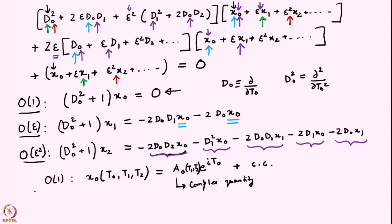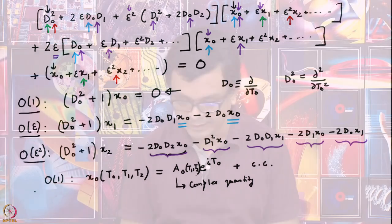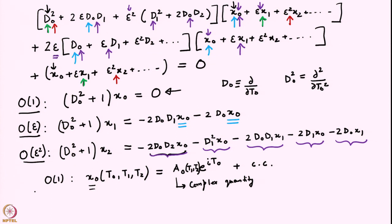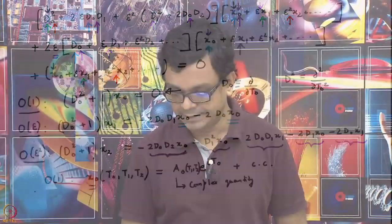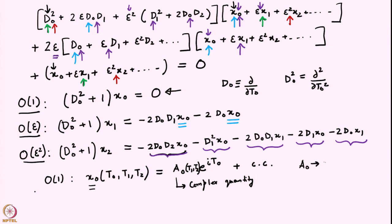This is slightly more complicated than before: earlier we encountered complex constants, now we encounter complex functions of t1 and t2. Let us see how to determine these unknown functions. At this order, a0 remains undetermined — nothing more can be done at order 1 to fix it.